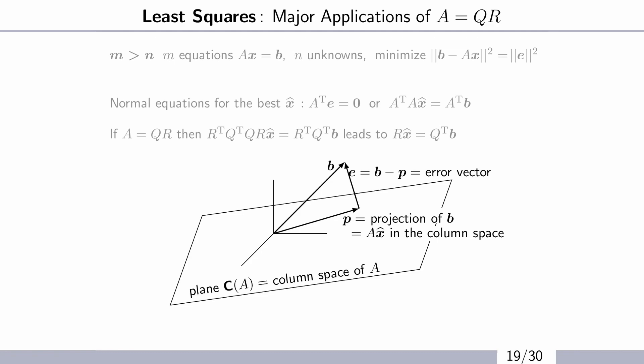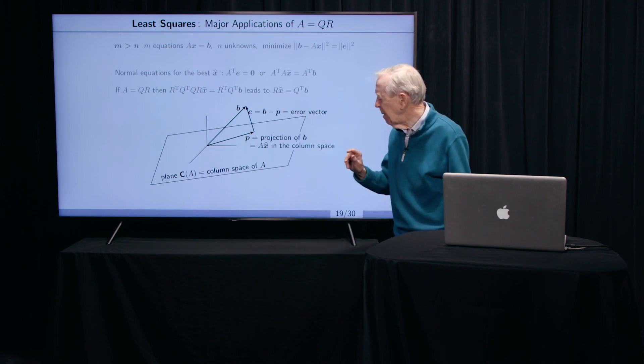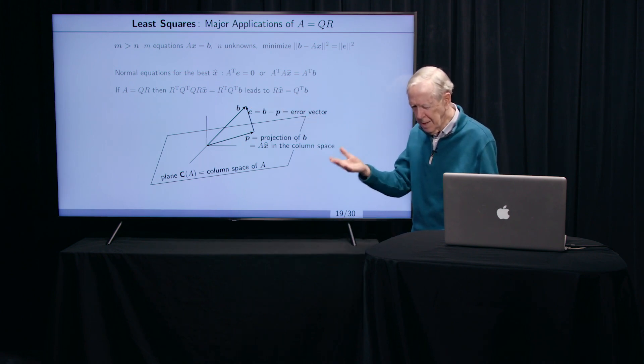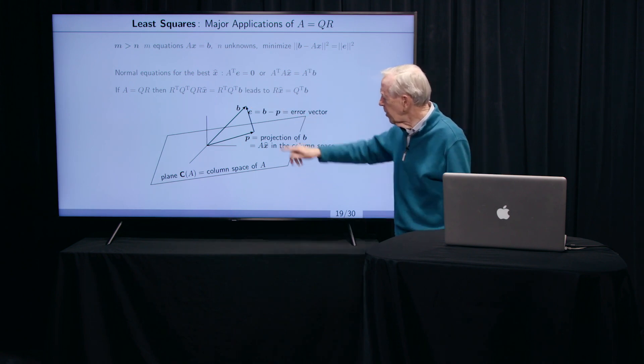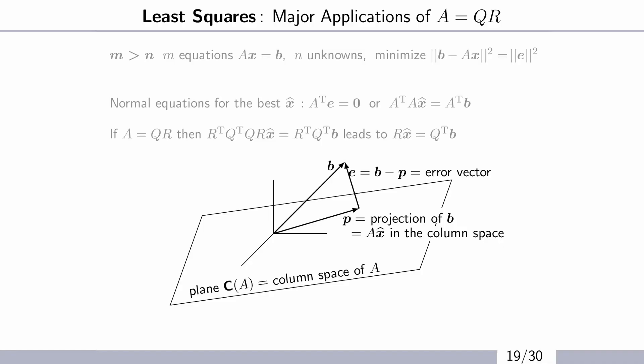So how do you deal with that? Geometry tells you you can't deal with B. You can't solve Ax equal B. So you drop a perpendicular. You find the closest point, the projection, in the space where you can solve. So then you solve Ax equal B̂.